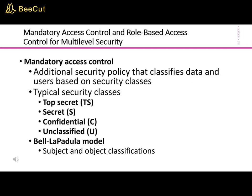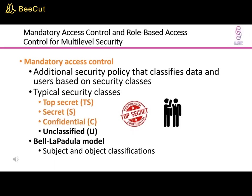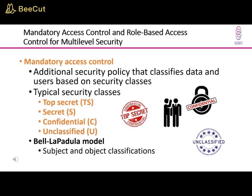In many applications an additional security policy is needed that classifies data and users based on security classes. This approach, known as mandatory access control (MAC), would typically be combined with discretionary access control. The need for multi-level security exists in government, military, and intelligence applications as well as in many industrial and corporate applications. Typical security classes are Top Secret (TS), Secret (S), Confidential (C), and Unclassified (U), where TS is the highest level and U the lowest.